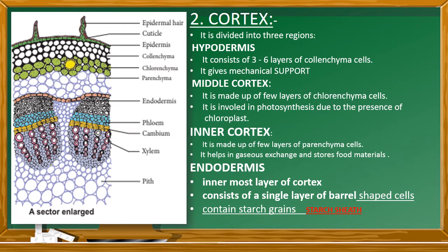The third region is the inner cortex. In the diagram, you can see a thin layer with intercellular spaces — gaps between the cells. That layer is called inner cortex, and it helps in exchange of gases and also stores food materials.